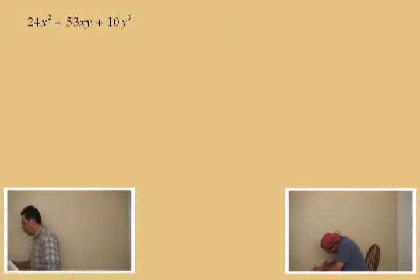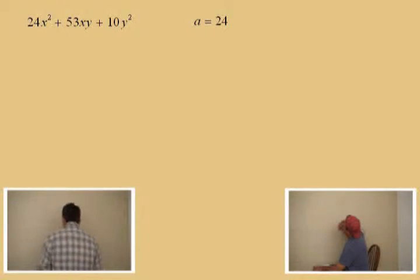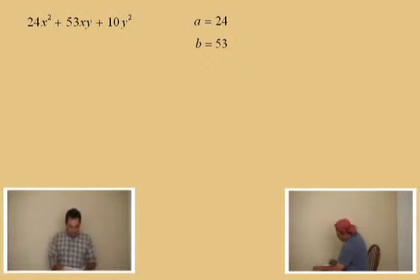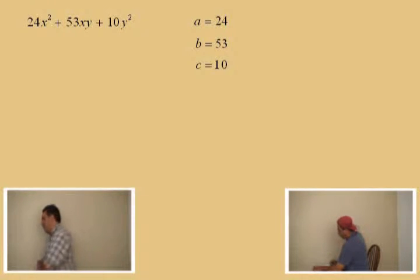We're just trying to learn the ABC method. Don't get scared. These are big numbers, but you can handle them. Charlie, what's the A term here? 24. Very good. What's the B term? 53. And what's the C term? 10. That's right.